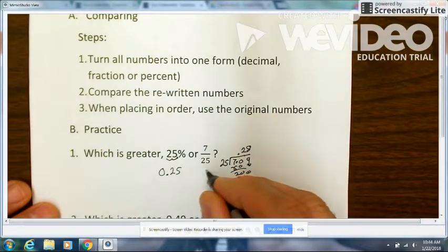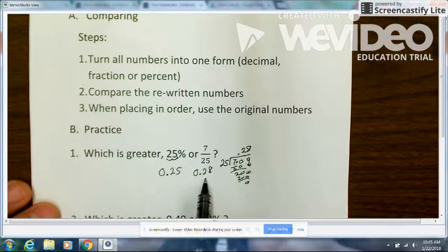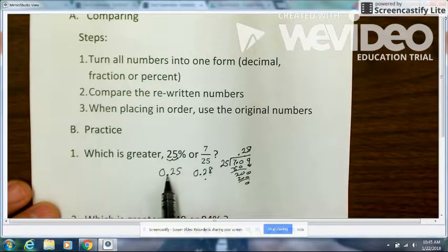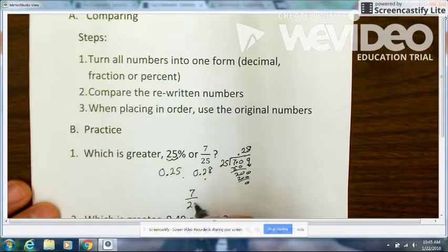Now as I look at the decimal numbers, this number is bigger because it goes to 0.28. This is 0.25. So my greater number is 7/25.